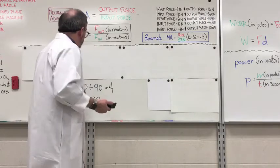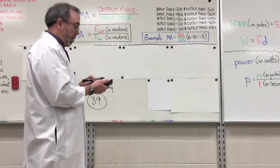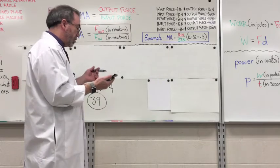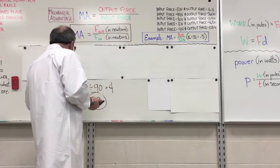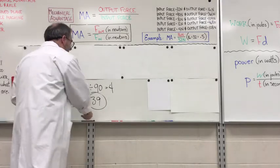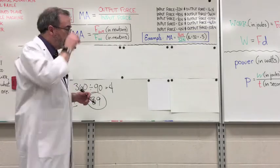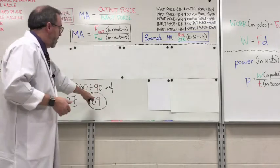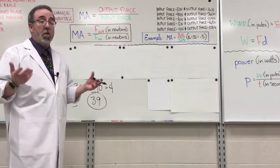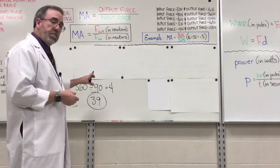And then the next one, we're going to have 108 divided by 4 equals 27. So we have all these different numbers. What you need to realize is the higher the number, the more of a mechanical advantage there is. So of these, 39 is the highest number, so that means it's got the most mechanical advantage.